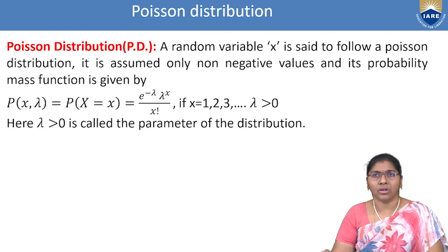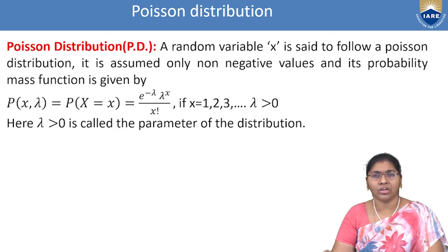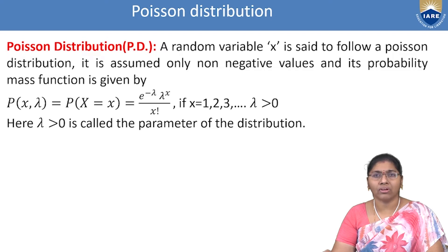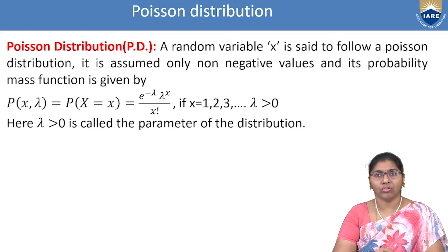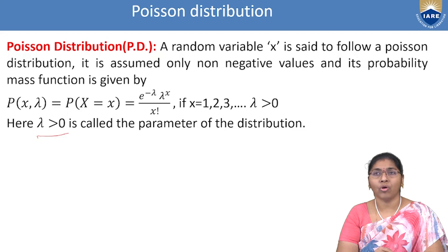A random variable x is said to follow a Poisson Distribution under certain conditions. It is assumed that only non-negative values are taken, and its probability mass function is given by: P(X = x) = e^(−λ) · λ^x / x!, for x = 0, 1, 2, 3, … where λ > 0. Here λ is called the parameter of the Poisson Distribution.